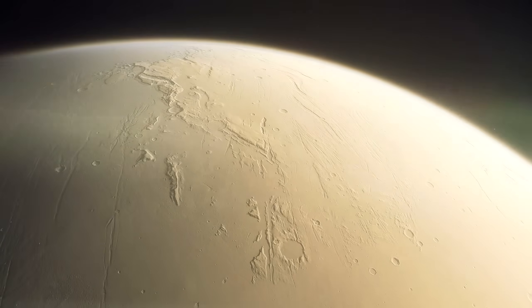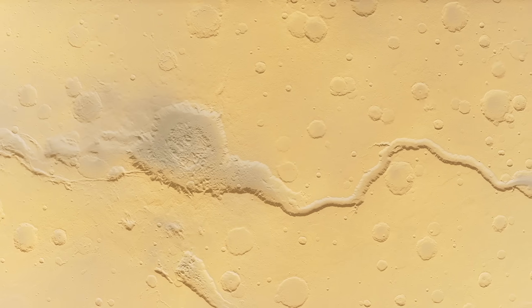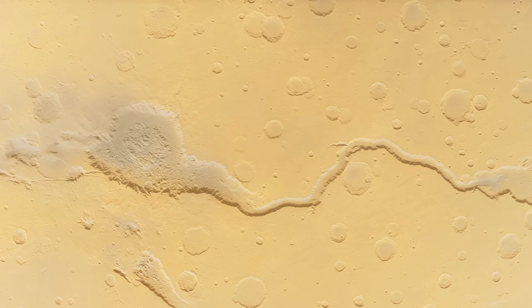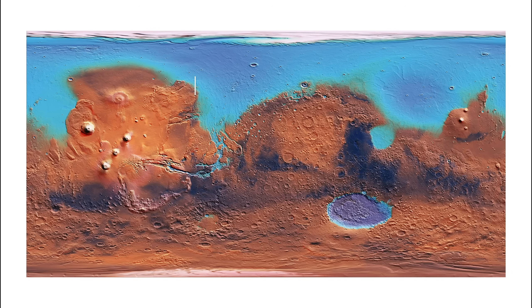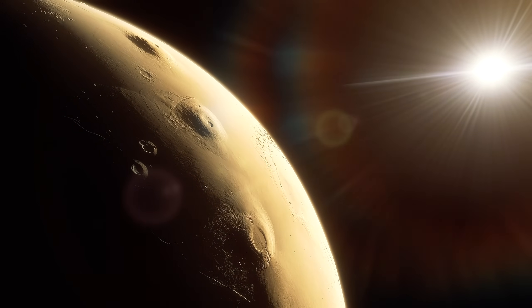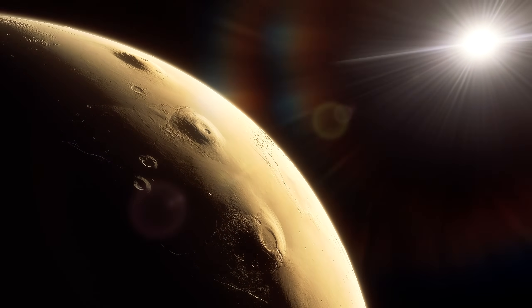Mars doesn't really experience plate tectonics, and without water, erosion rates are minimal. There are however regions of Mars without so many craters, indicating that at least one process is taking place to renew the surface. We can attribute this to volcanism.